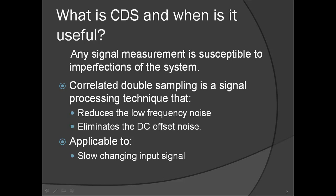CDS acts similar to a high-pass filter for this low frequency noise. The effect of CDS is highest for extremely low frequency signals, and thus it eliminates the DC offset completely. You can use CDS when the input signal changes very slowly. CDS is based on taking two samples: one of the signal and the second of a reference, with a delay between the two.